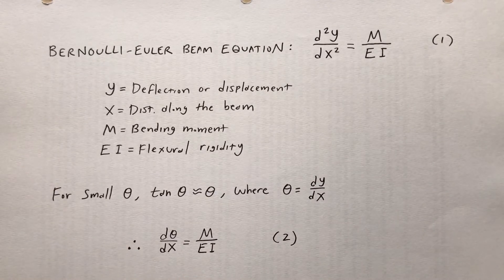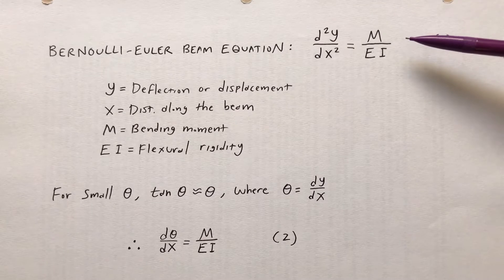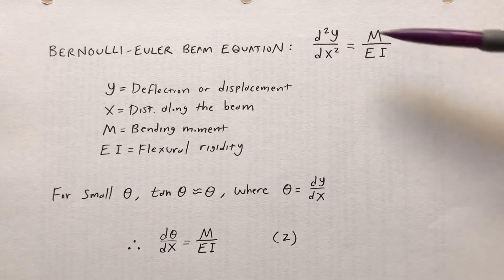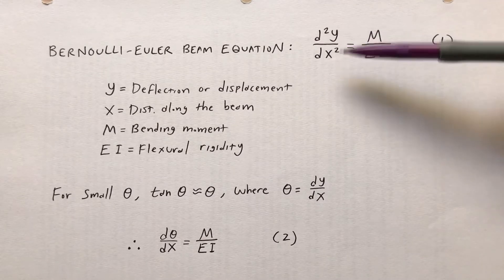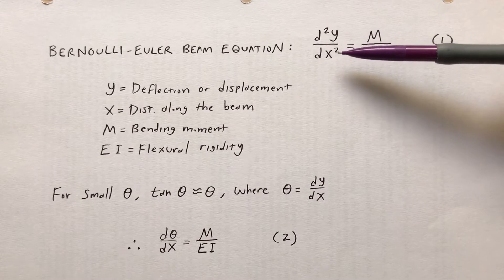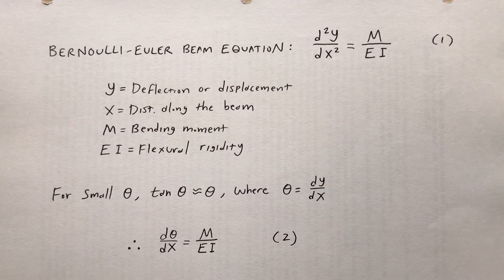One way of finding the amount of displacement is direct integration. The Bernoulli-Euler beam equation involves a second derivative of displacement with respect to distance along the beam, so you can resort to a direct integration method to find the displacement.